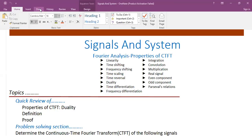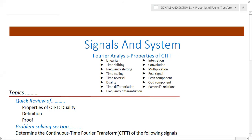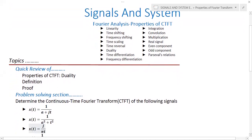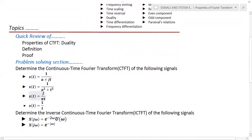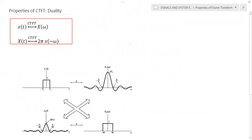In this lecture, we will discuss the duality property of continuous time Fourier transform and we will also discuss some problems related to this concept. We will represent the Fourier transform of the signal x of t as x of omega for simplicity. Usually we write x of j omega, but here I will use x of omega to explain the duality property — both are the same representation.